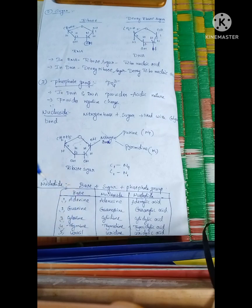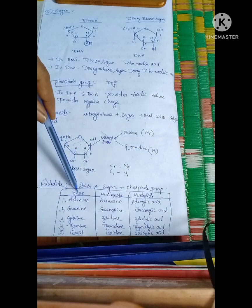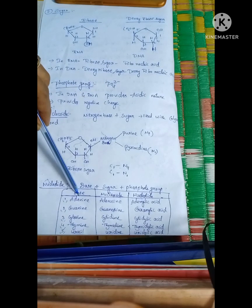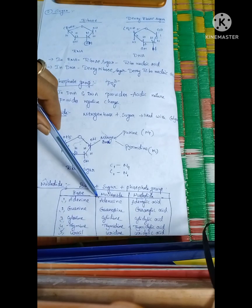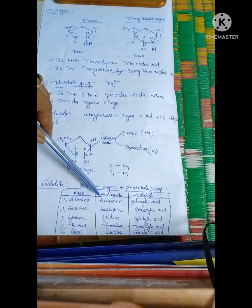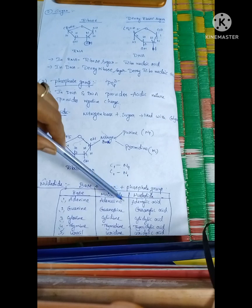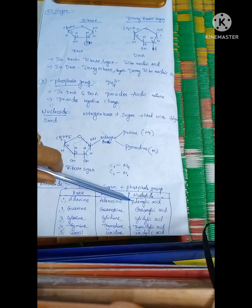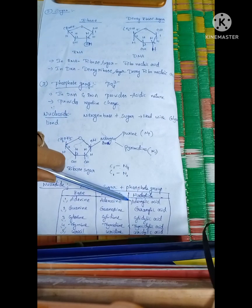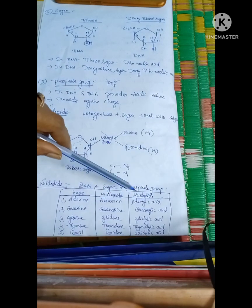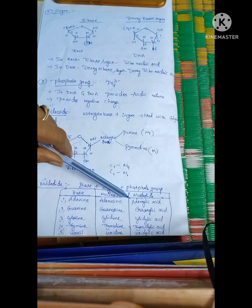For example, if we add adenine base to ribose sugar, it is called adenosine — that is a nucleoside. When adenosine is also joined to a phosphate group, it is called adenylic acid — that is a nucleotide.